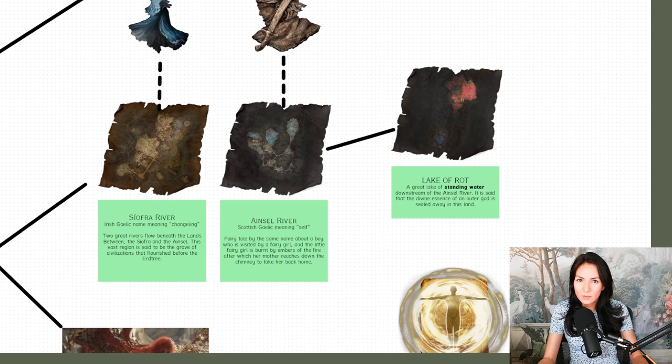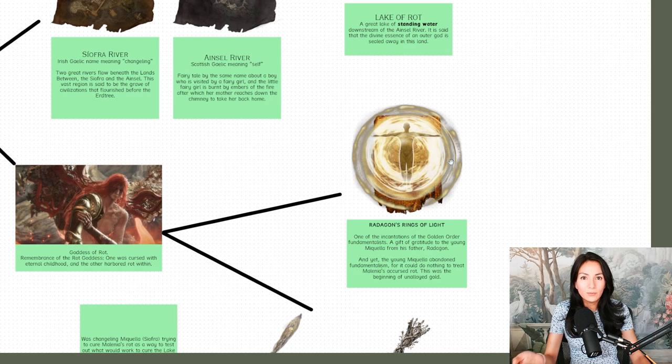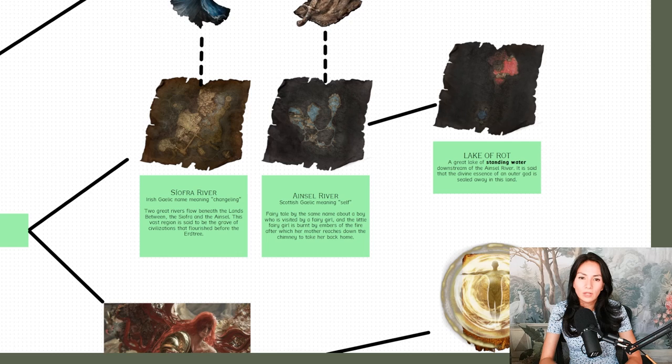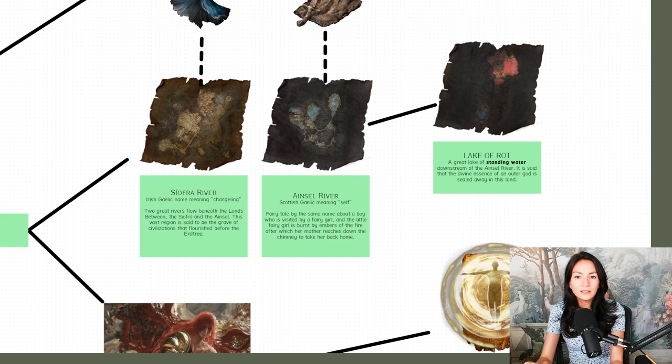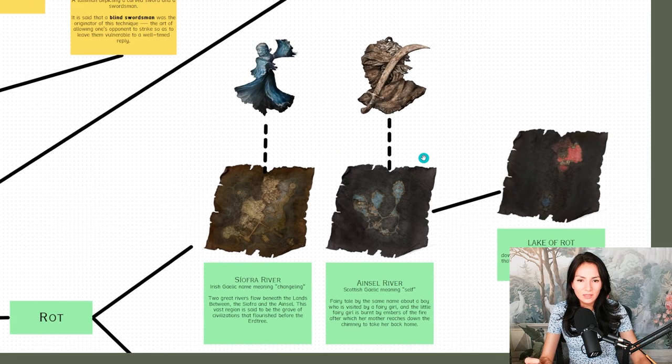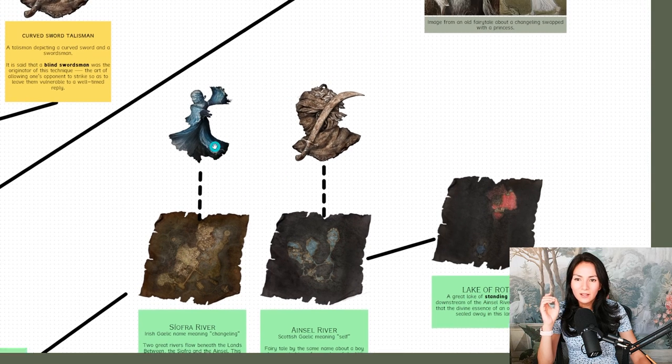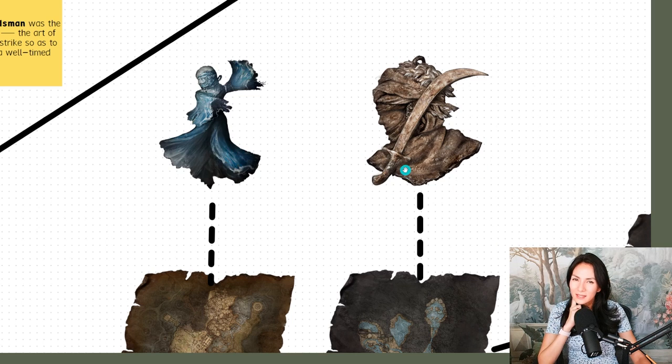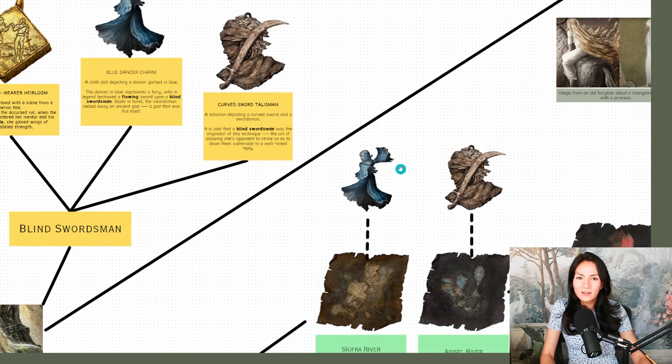I think here that we have the names of the two fairies involved. I think Siofra is the changeling. And I think Ainsel meaning self is very literally the river, a river fairy. The question that I have is, was the changeling Miquella trying to cure Malania's rot as a way to test out what would work to cure the Lake of Rot in Ainsel River. And is Ainsel trapped there?